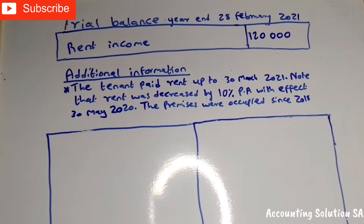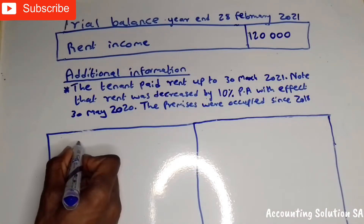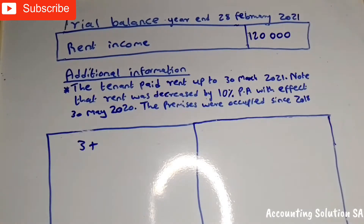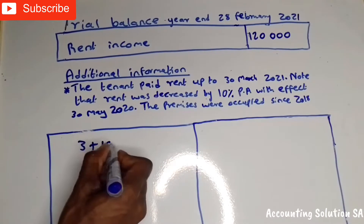Number one, we have to count months before the decrease plus months after the decrease. Before the decrease, we count from March 2020: March, April, and May — which gives us 3 months before the decrease. Then we add the months after the decrease: June, July, August, September, October, November, December, January, February, and March — which gives us 10 months.